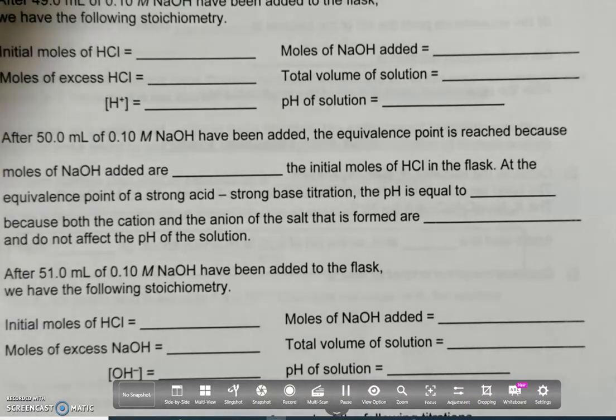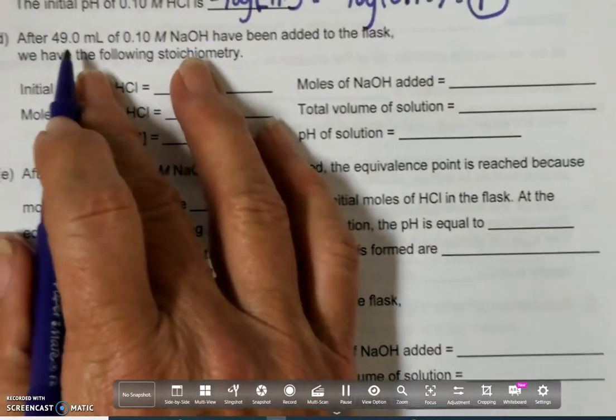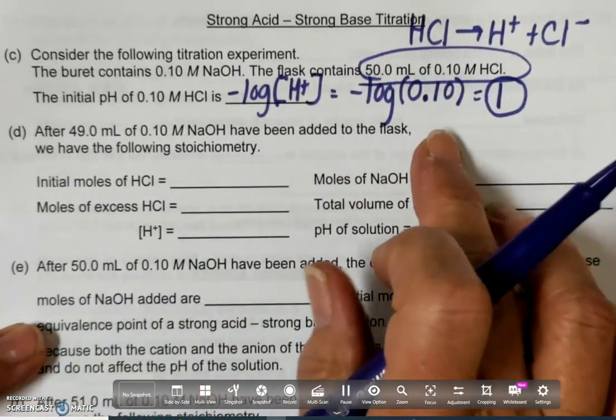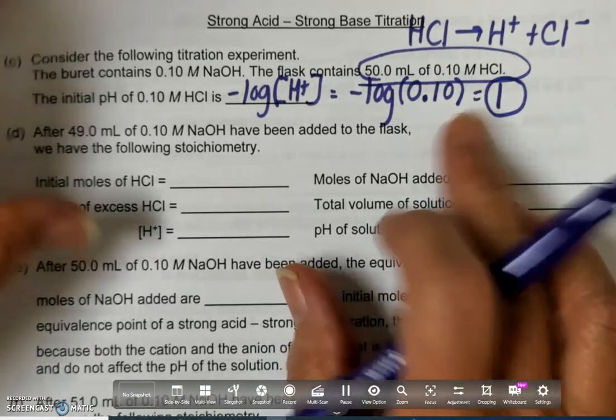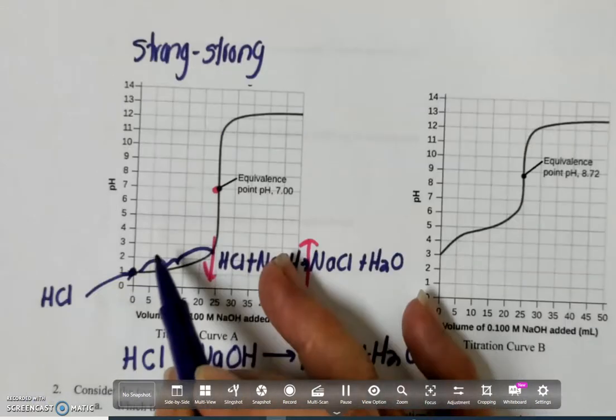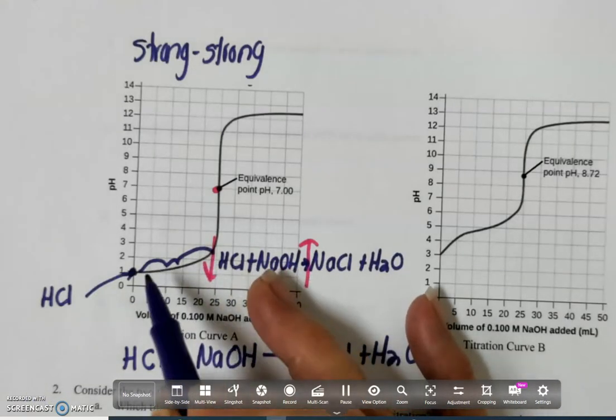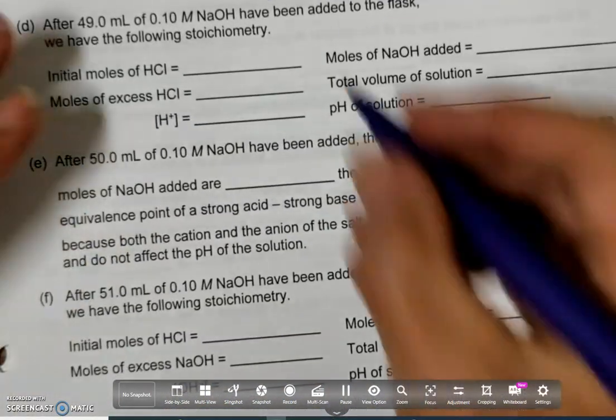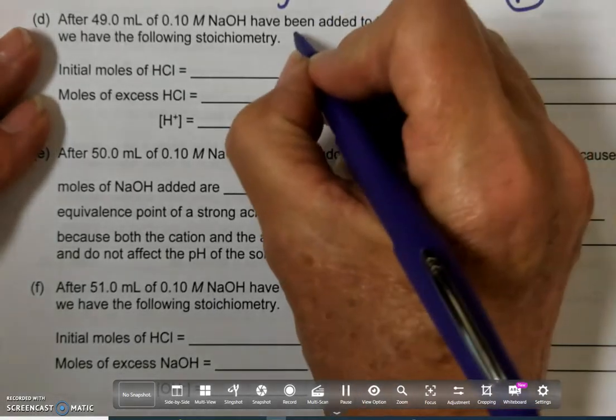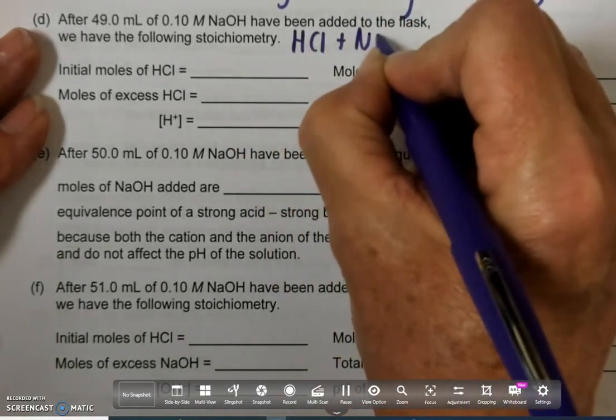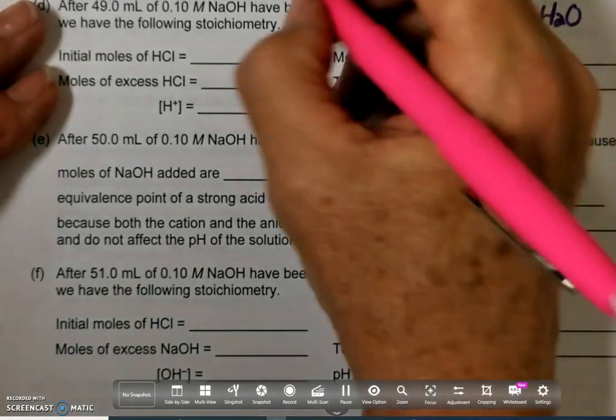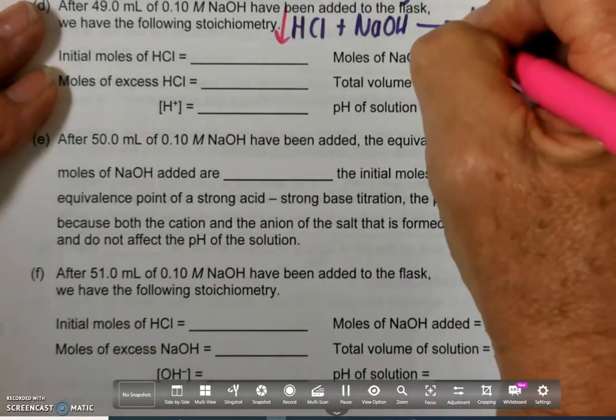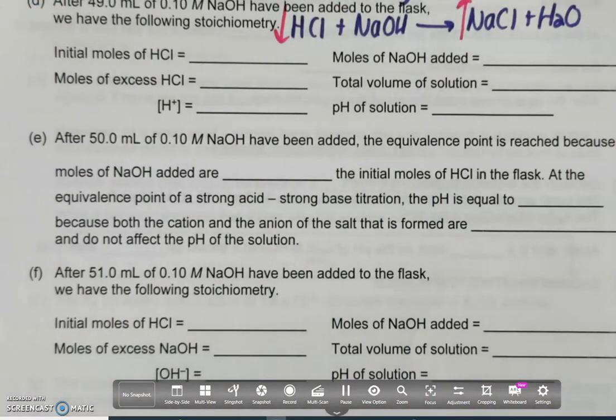And all through here, I use all of this up that I have. Because it's below the equivalence point, which is here. So I'm using this up, and I'm just going this direction. So what we did in your packet is we said, let's say that I add 49 milliliters to this flask. I'm not at the equivalence point. What is my pH? So basically, I'm somewhere down here.